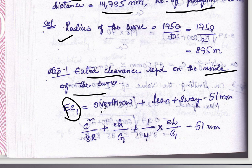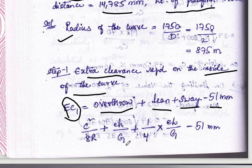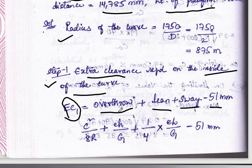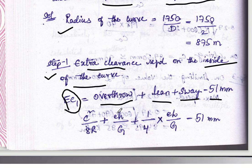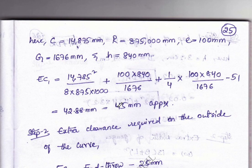The extra clearance for inside of the curve is represented by EC1. EC1 equals the formula: overhang plus lean plus sway minus 51 mm, which can be written as C squared by 8R plus E times H divided by capital G plus one-quarter times small e times capital L divided by capital G, minus 51 mm. Substituting all values, we get the EC1 value.